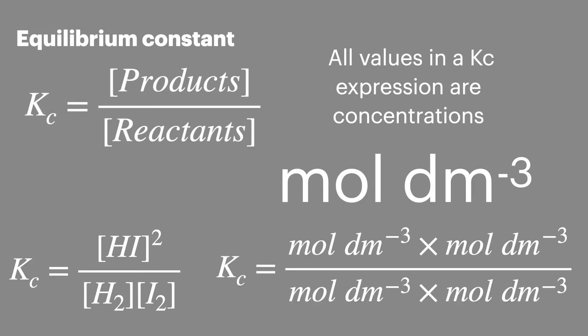If we look at the units of these values we can place them in the equation like this. We have two sets of units for concentration on the top, this comes from the HI squared. We have two units for concentration on the bottom and this comes from the concentration of hydrogen and the concentration of iodine.